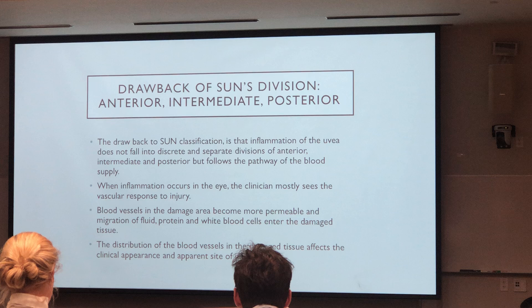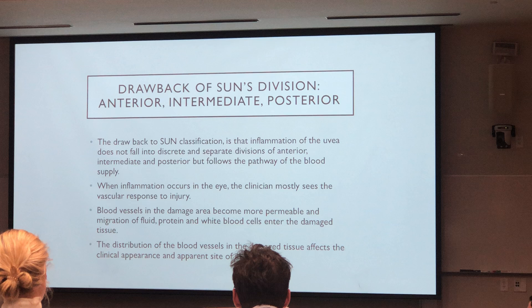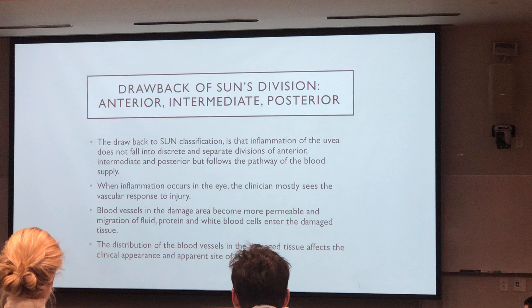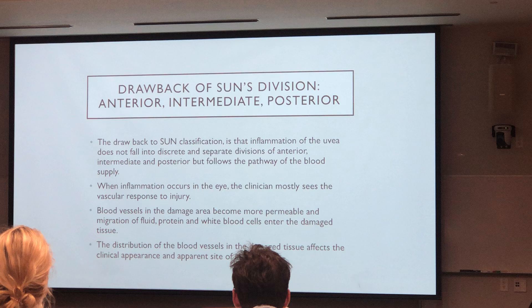Because inflammation really follows the route of the blood vessels. So when you have an inflammation, what you see is really the response of the blood vessels to the tissue injury — the leaking of the blood vessels, the swelling of the blood vessels, and white blood cell accumulation. The site of the inflammation is directly related to the course of the blood vessels, and the course of the blood vessels don't neatly fall into the front, middle, and back part of the eye.